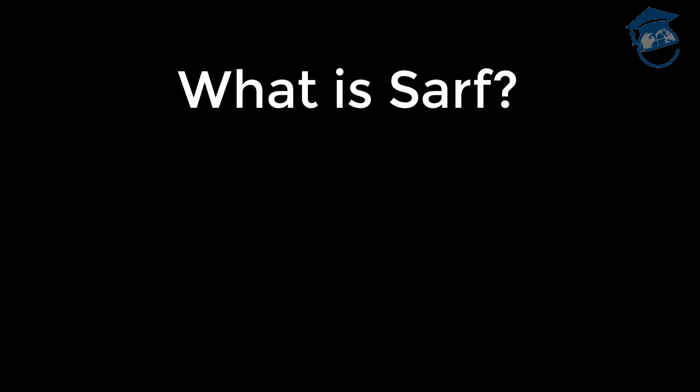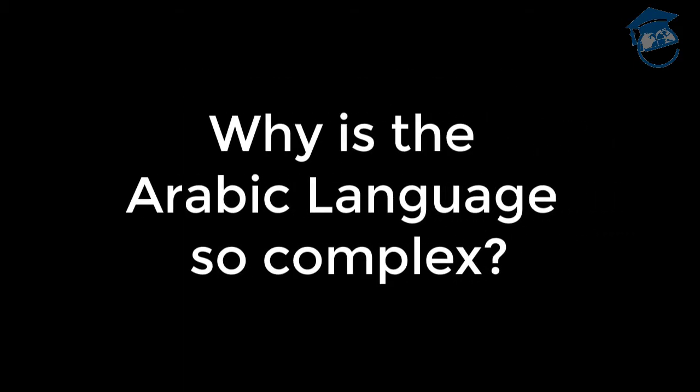The Arabic verb is known as fa'al. The asal, or root — the three letters that are at the heart of any Arabic word — can be manipulated to form up to 14 different derived verbs, each with its own meaning and conjugation. Learning basic sarf will assist you in utilizing the Arabic dictionary. The complexity of the Arabic language is mesmerizing.